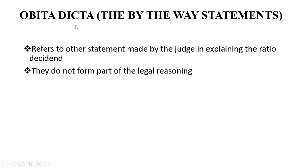Obiter Dicta is the 'by the way' statement given by the judge in court of law. It refers to other statements made by the judge in explaining the Ratio Decidendi. These are other statements made by the judge in court, trying to explain why he reached a certain decision. For example, in a civil case, he can explain both the evidence presented by the defendant and the plaintiff that resulted in a certain outcome.